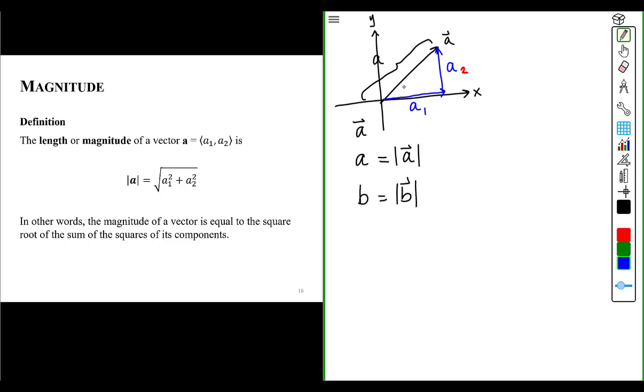And if we had our protractor out, we'd be able to measure the angle as a positive angle counterclockwise from the positive x-axis. Now, can you think of a way of calculating the length of vector A from this information I've given? Oh, I think I heard someone say use the Pythagorean theorem. And you're absolutely right.